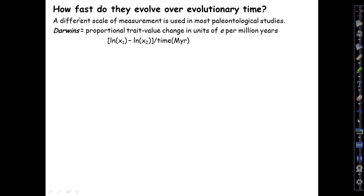A completely different scale of measurement is most commonly used in paleontological studies based on fossil evidence. These units are called darwins, and they are proportional trait value changes in units of e — the base of the natural logarithms — per million years. You calculate darwins by taking the natural log of the starting trait value, the natural log of the ending trait value, taking their difference and making it positive, then dividing by the amount of time between those two observations in millions of years.